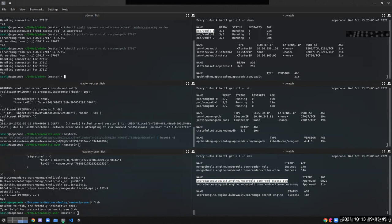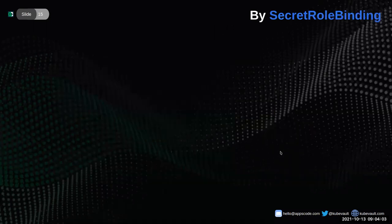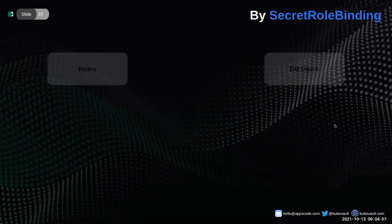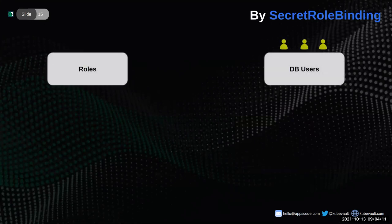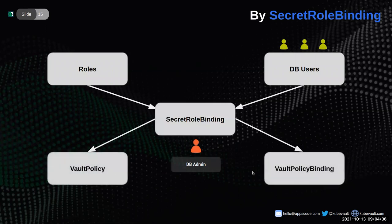We've seen how to use the Secret Access Request to get user credentials. Now let's discuss the second method: using the Secret Role Binding CRD. A Secret Role Binding is a Kubernetes CRD that allows a DB admin to bind a set of roles to a set of DB users. Using Secret Role Binding, the admin takes some roles and DB users, applies the binding, and it generates a Vault policy and Vault policy binding containing all the necessary permissions for those users.